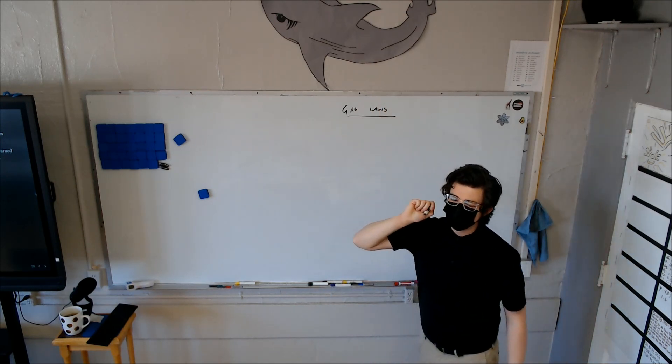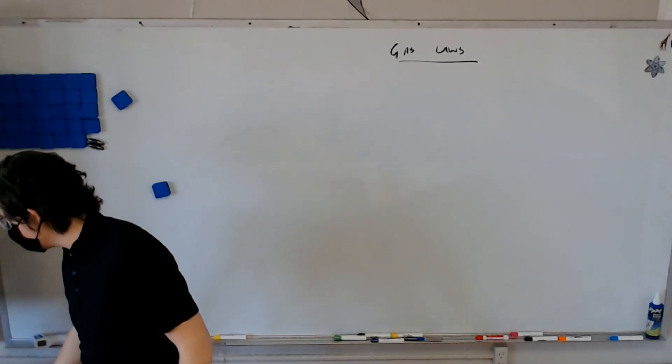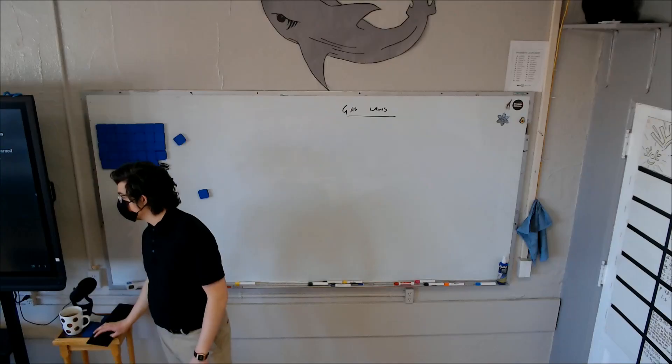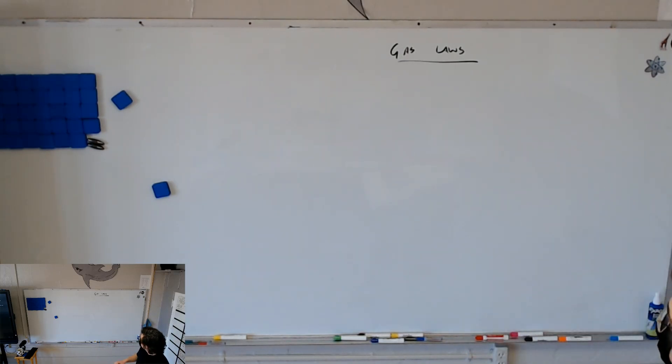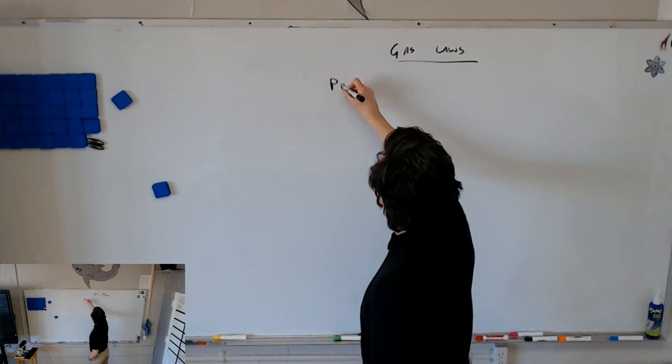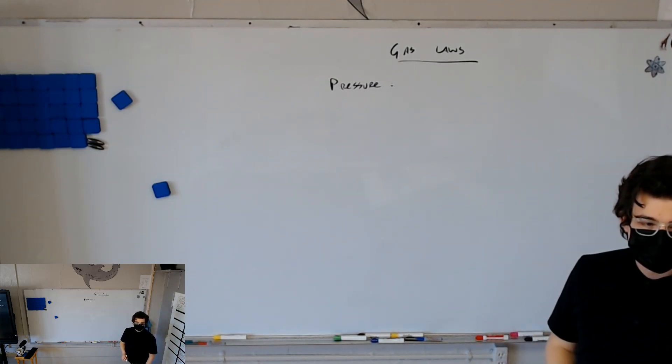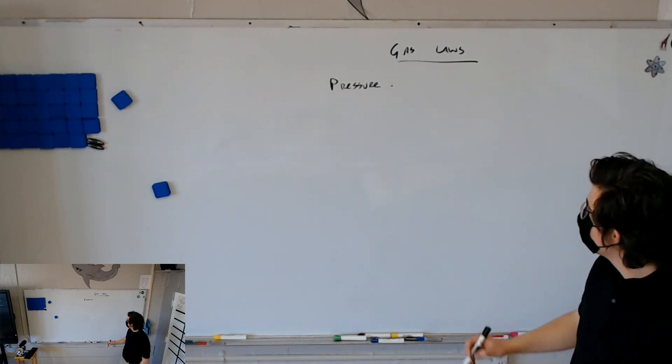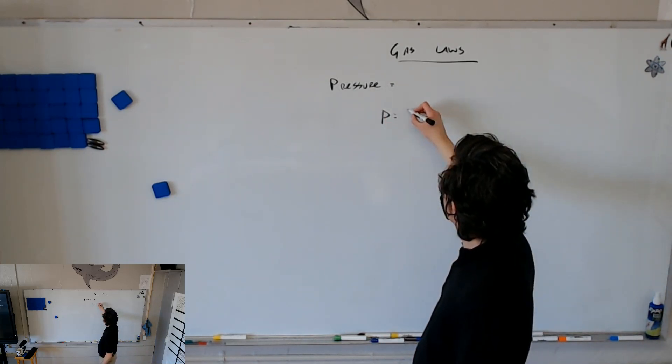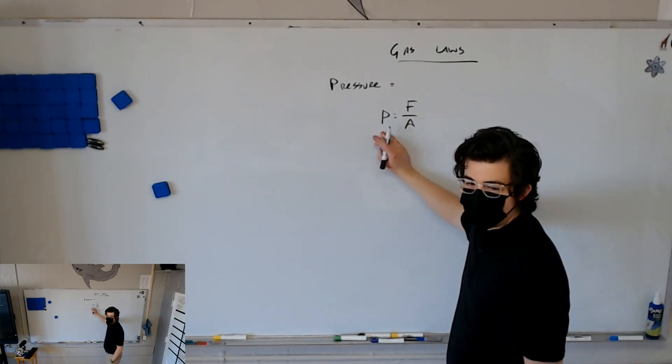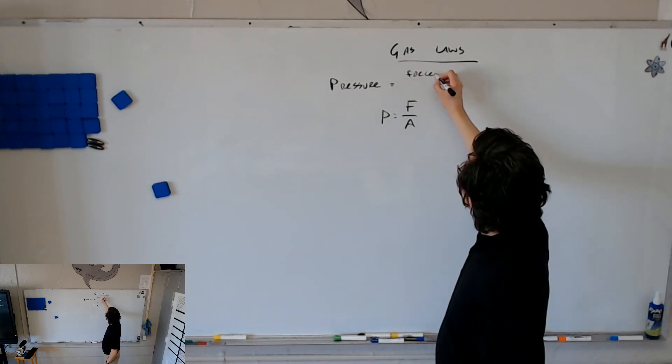There are three what we call basic gas laws. We're going to talk about, your book talks about two of them, I think because the third one has a silly name and so we don't really want to, it's named after a French guy, but people think it's funny, especially freshmen, and you are freshmen. So the first thing we're going to talk about, though, is pressure. We're going to revisit pressure. Pressure equals what? It should be like one page back. P. Okay, sure. P equals force divided by area.